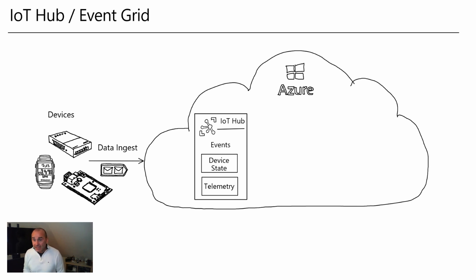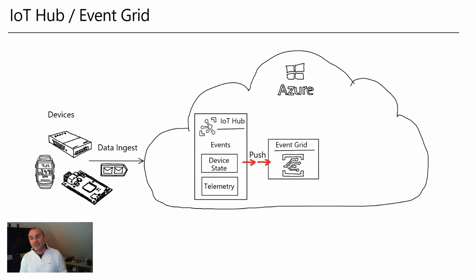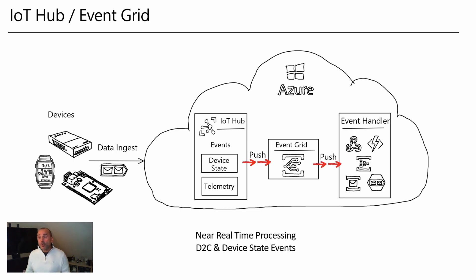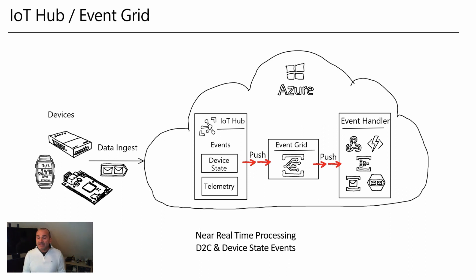We also have a second category, which is all about the state of the devices — think about events like device connected, device disconnected, device created, or device deleted. When IoT Hub sends these events, it uses another Azure service: IoT Hub pushes those events into Event Grid, and then Event Grid pushes those events into so-called event handlers — which could be a webhook, an Azure Function, an Azure Event Hub, an Azure Service Bus, or an Azure Storage Queue. This push-push functionality makes it super easy to create new real-time processing whenever needed.